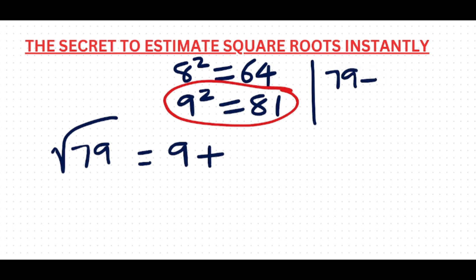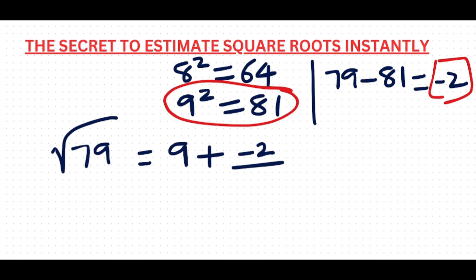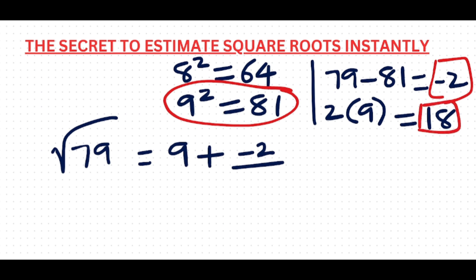To find the numerator, take the same number — 79 — and subtract the nearest perfect square, which is 81. So 79 minus 81 gives you negative 2. Negative 2 becomes the numerator. To find the denominator, you do 2 times 9, which gives you 18. So the expression is 9 plus (negative 2 over 18), which becomes 9 minus 2 over 18, equal to 0.11.